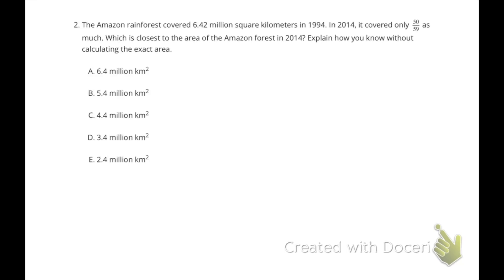Number 2: The Amazon rainforest covered 6.42 million square kilometers in 1994. In 2014, it covered only 5/6 as much. Which is closest to the area of the Amazon forest in 2014? Explain how you know without calculating the exact area.